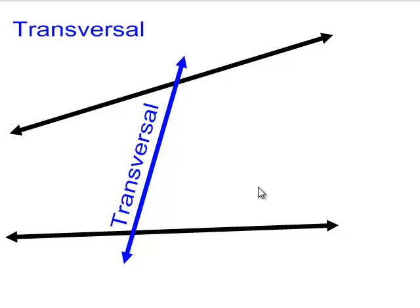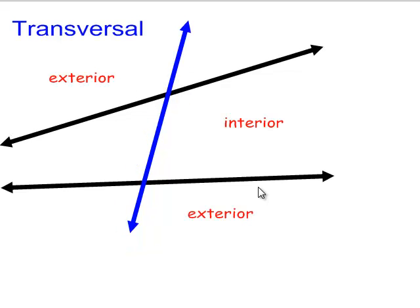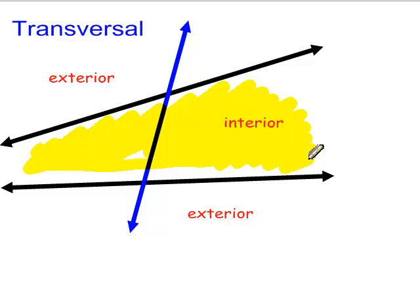A transversal is that line in blue that's cutting across those two black lines. It just cuts across those lines. Once we've created this image, we need to talk about what's interior and exterior. Between the two black lines — that's the interior. Anything outside of that is the exterior.